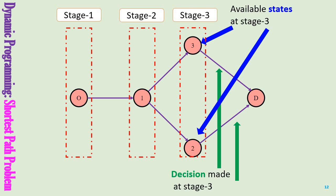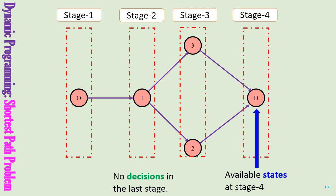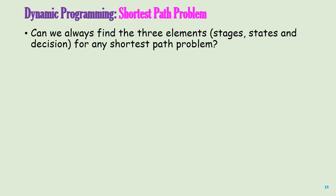From stage 3 you have two states, and from any of those states you can make some decisions. Those decisions will create the stage 3 problem, and the decisions will end at stage 4. That is how you define the stages, states, and decisions for a shortest path problem. The question is: can we always find these three elements for any shortest path problem? And the answer is yes.